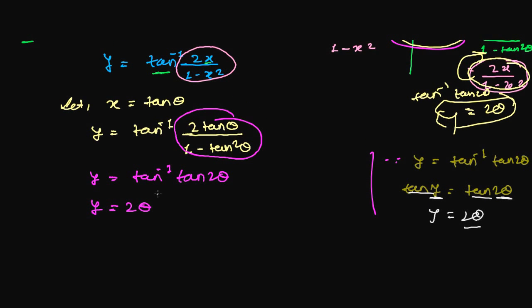Here x is equal with tan theta, so what I can say is that tan inverse of x will be equal with theta. This tan goes to the other side, so now I can write y equals to 2 times tan inverse of x.